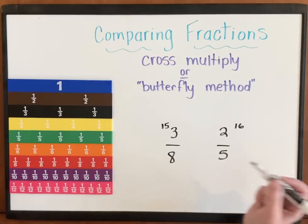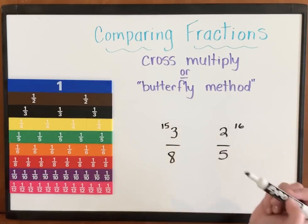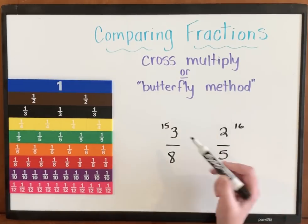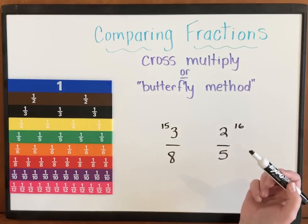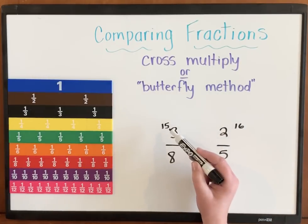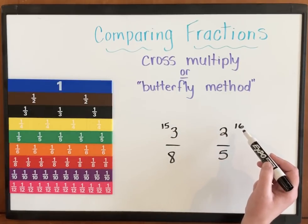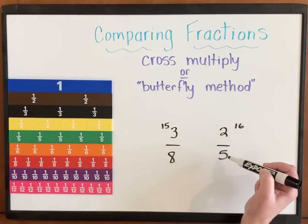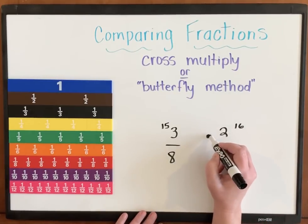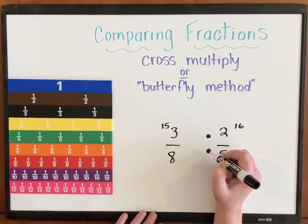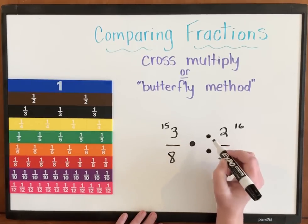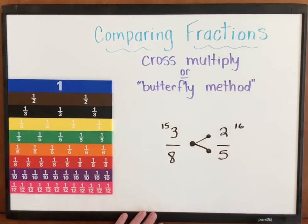Now I've got two numbers. I've got a 15 and a 16. Well, what is greater? 15 or 16? Clearly 16 is more than 15. So when 16 is more, that means 2/5 is greater. That means 2/5 would get 2 dots. 3/8 would get 1 dot. And you're going to connect your dots.